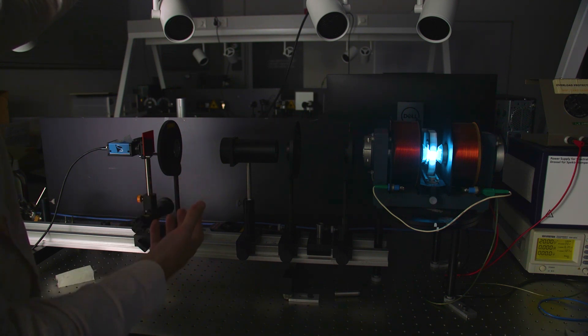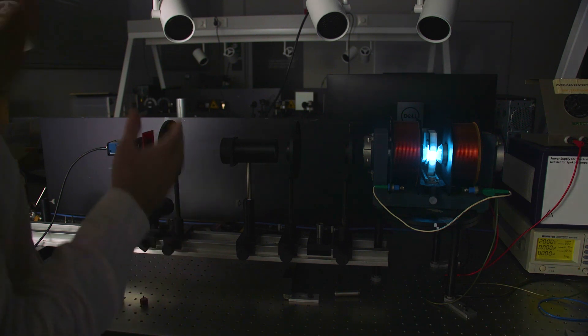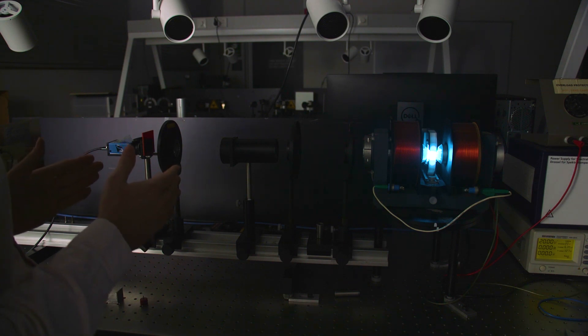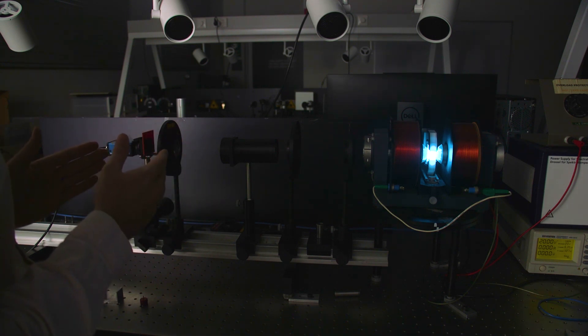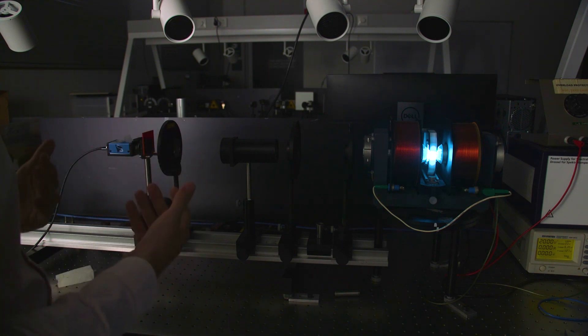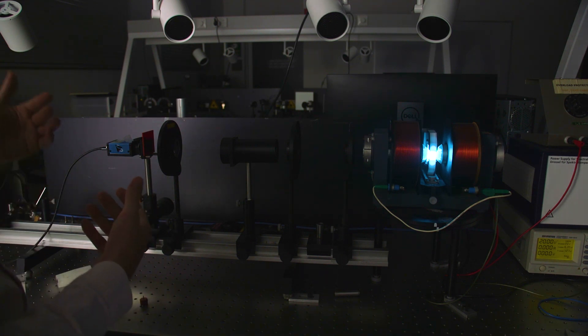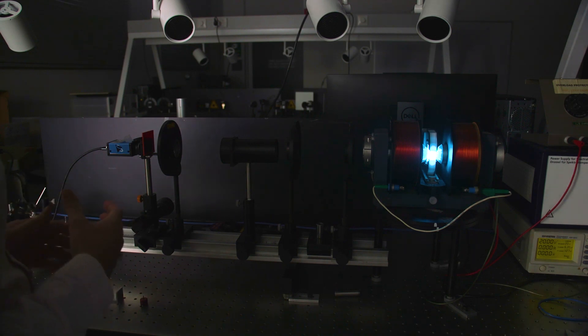The Fabry-Perot interferometer is the core of this experiment. It's how we're able to discern between the very small shifts in wavelength due to the Zeeman splitting. It's essentially just two semi-transparent mirrors oriented parallel to each other. As the light passes through this etalon you get resonance effects which form an interference pattern which takes the shape of concentric rings.